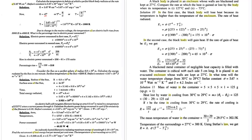So we are left with Stefan's constant, temperature, and emissivity. We said it is safe to assume emissivity equals 1, because here they specifically say it is a perfect blackbody, which means emissivity is exactly 1.